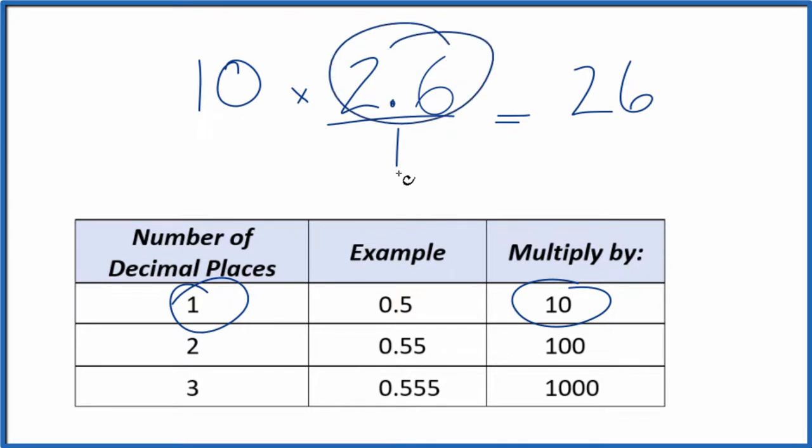But we can't just multiply the numerator by 10. We also need to multiply the denominator by 10. That's because 10 over 10 is just 1. 10 divided by 10 is 1. And when we multiply by 1, we don't change the value, just the way it's represented. So 10 times 1 is 10. And now we have a fraction.